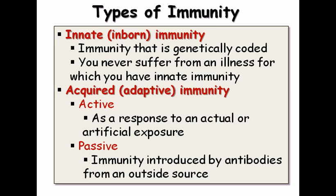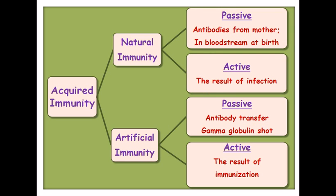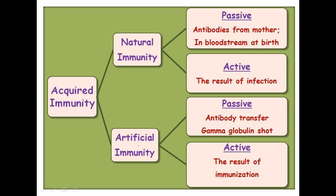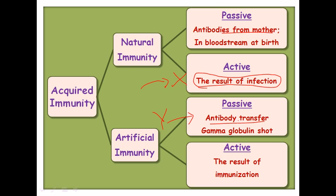Acquired immunity divides further into natural and artificial. Natural passive immunity means antibodies received from the mother during birth. Natural active immunity results from an actual infection within your own body. Artificial passive immunity involves transfer of antibody cultures from outside. Artificial active immunity is the result of immunization — a dosage that triggers your cells to produce a particular antibody.